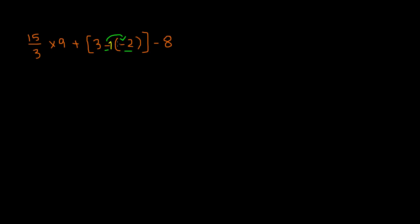Remember to first bring down everything else just as it is. So we have 15 divided by 3 times 9 plus, and in brackets we have 3. Now we do the multiplication: a negative times a negative gives us a positive, so our answer is positive, and 1 times 2 is 2. The number didn't change — it still stayed 2 — except the sign turned from negative to positive. Since we've already done the distribution, we don't need these parentheses anymore. We'll just keep the brackets, and then we have minus 8.